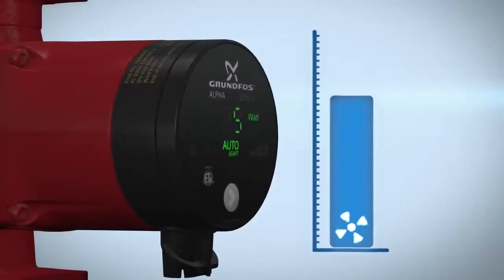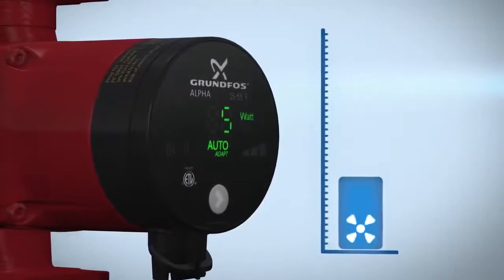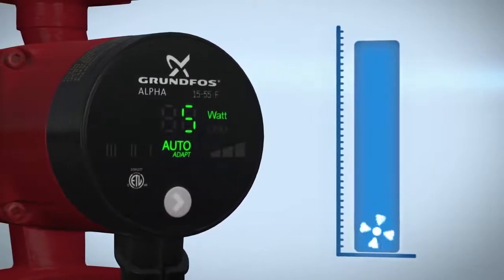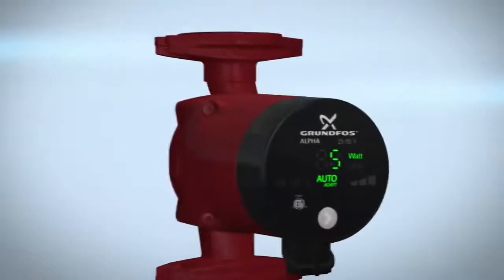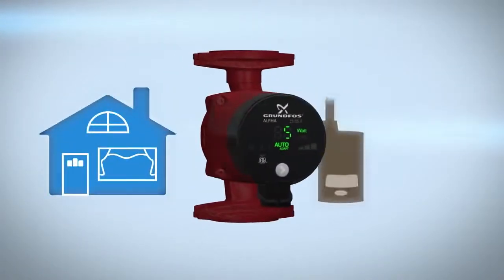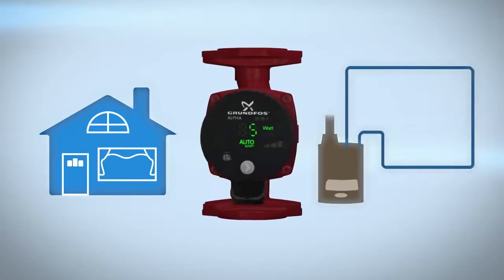Grundfos Alpha is suitable for systems with constant or variable flows where it is desirable to optimize the setting of the pump duty point. This video will show you how to install the Alpha for residential heating and hot water recirculation applications.